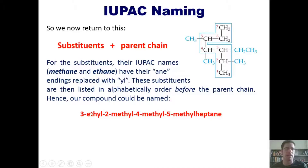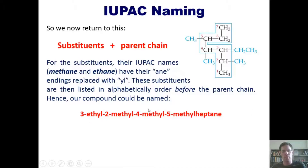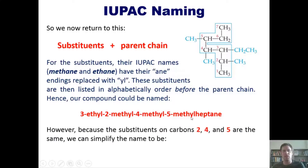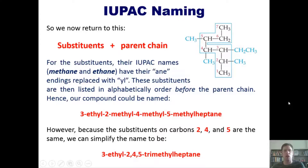The ethyl group is listed before the methyls because 'e' comes alphabetically before 'm.' Since the substituents on carbons two, four, and five are all the same, we can simplify the name: 3-ethyl-2,4,5-trimethylheptane. This indicates three methyl substituents at carbons two, four, and five, and an ethyl group at carbon three of the heptane parent chain. That is the full IUPAC-approved name for this molecule.